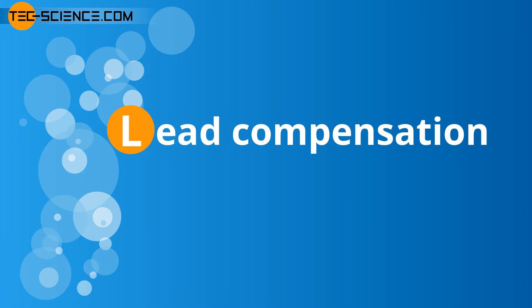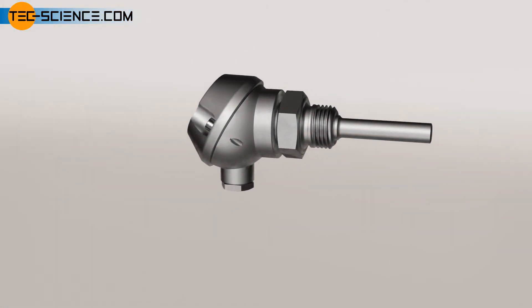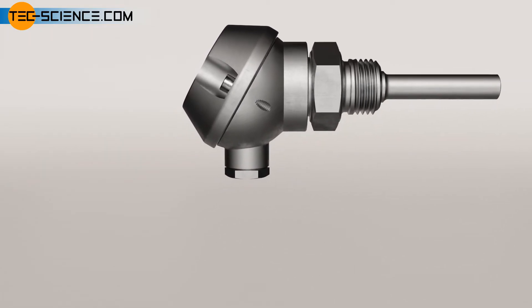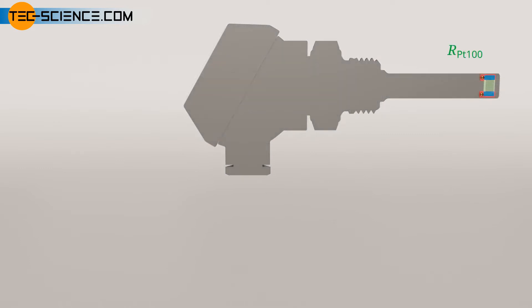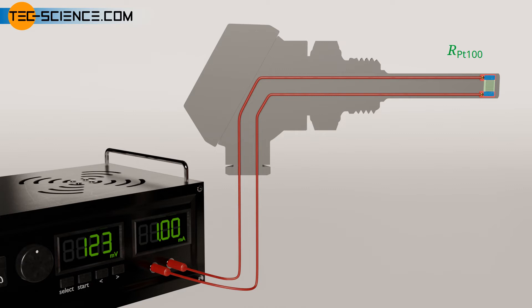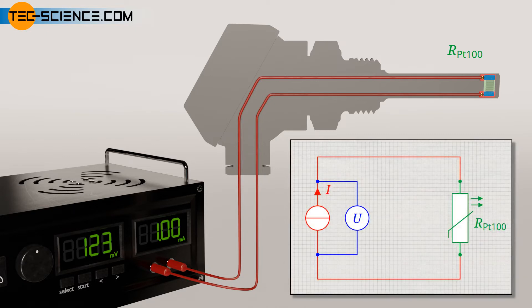Lead compensation. This image shows a PT100 with a terminal head for screwing into a pipe system to monitor the temperature. The principle of determining the temperature is done as just described. A power supply unit is first used to generate a constant current which flows through the PT100. The voltage required for this is set directly on the power supply unit. In this case, the generation of the current and the measurement of the voltage takes place directly at the power supply unit and is indicated on the display.